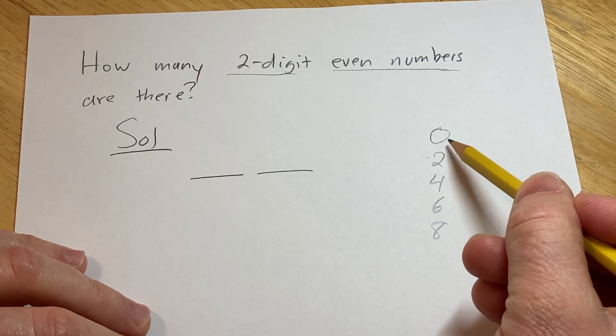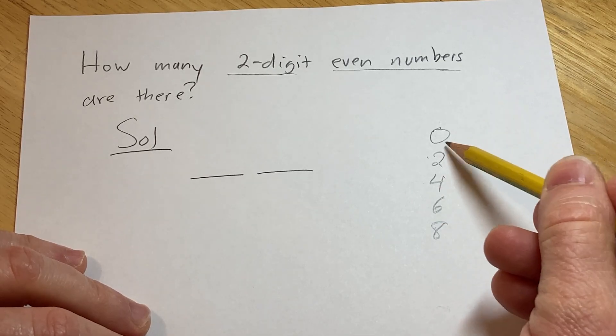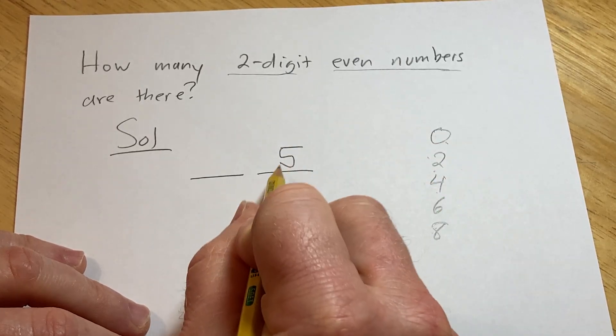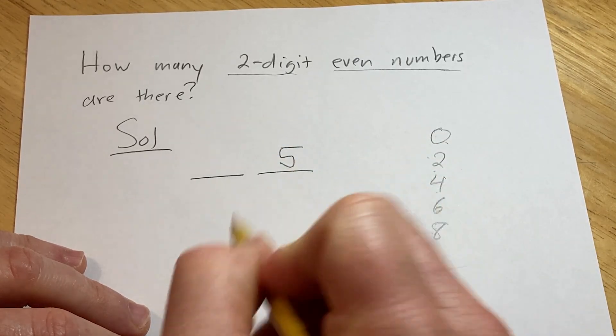So the second digit has to be one of these. So we have one, two, three, four, five. So there's five ways that we can pick that second digit.